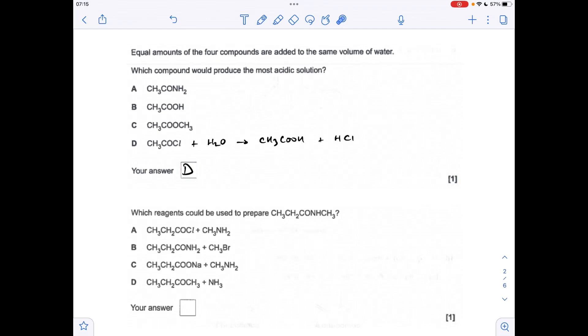And the last of the multiple choice questions. So this is a secondary amide here. So how do you make those? Well, you can make them from acyl chlorides and primary amines. So this part here is going to come from ethanoyl chloride. And this part here is going to come from methyl amine. So you can see A is that combination. So that's the answer.